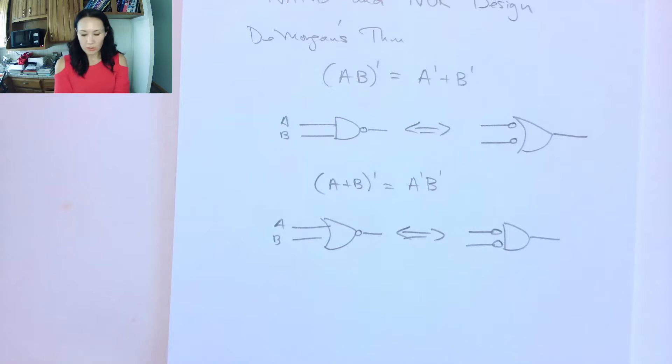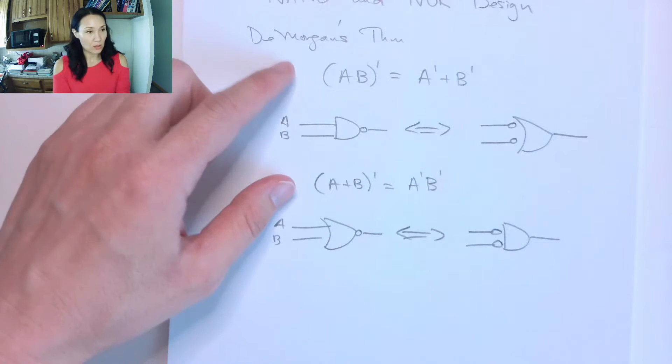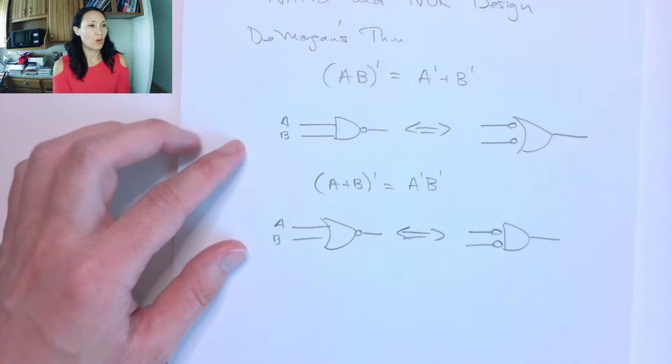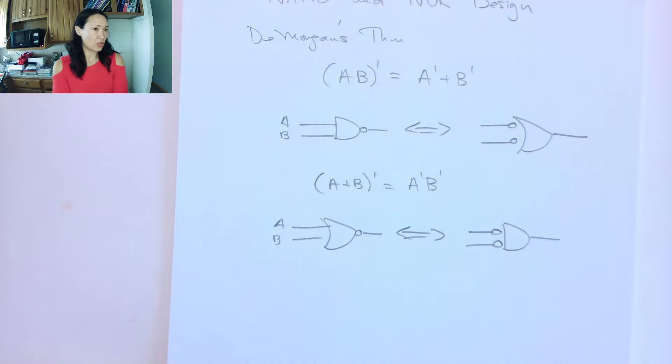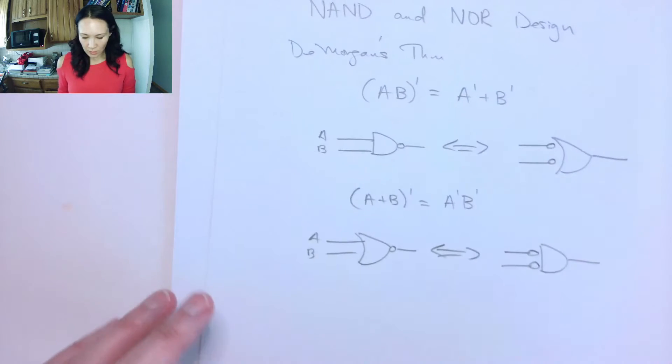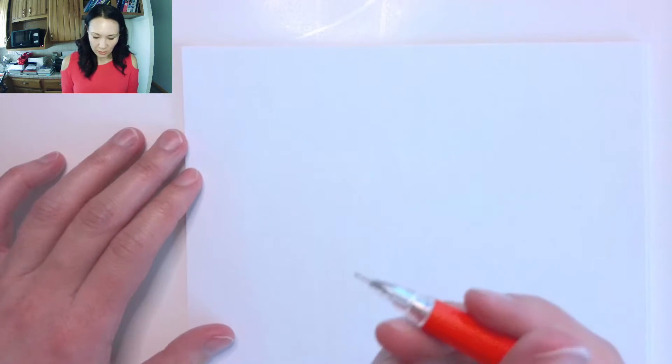And you can either do this using De Morgan's, you can do this with the functions, or you can actually just do this on inspection too. So if you add inverters, like in your circuit, if you want to add bubbles here and there, you can effectively implement De Morgan's at the circuit diagram level. So let me show you a couple examples of some of these simplifications we might make.